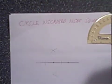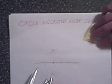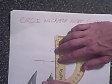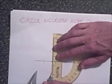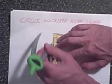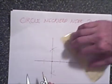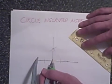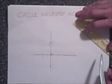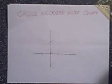Then you connect and draw a segment through these intersecting arcs, which should go through your point — and you have a right angle. So let's do the same for the other point.